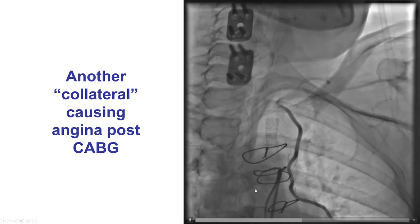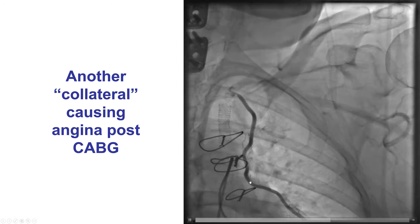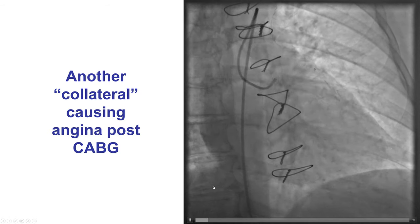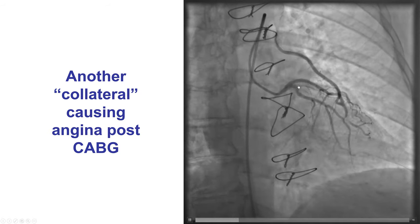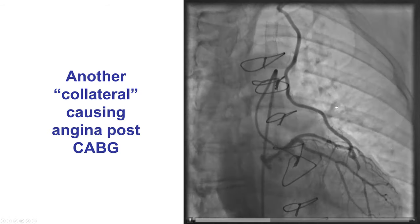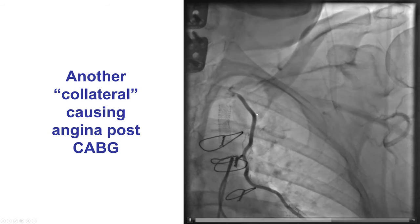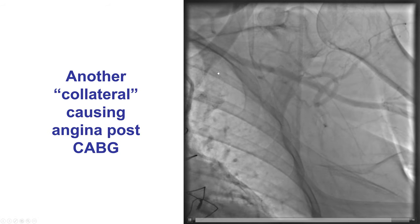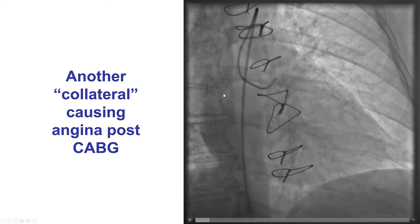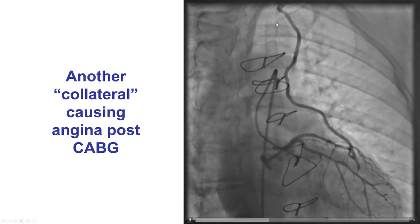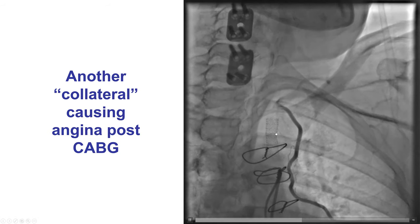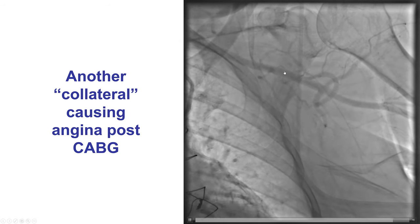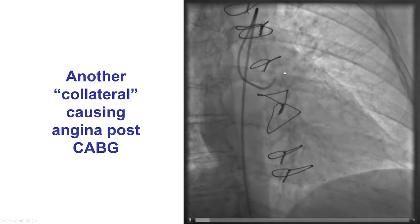Here is an example that resembles a collateral but is not: there is filling of the LAD and then retrograde filling into the LIMA and the arm. The reason for this finding is significant proximal subclavian stenosis — this is an example of subclavian steal.